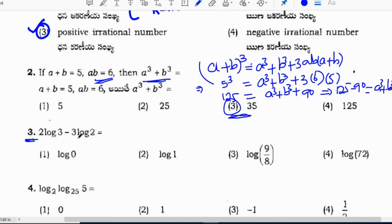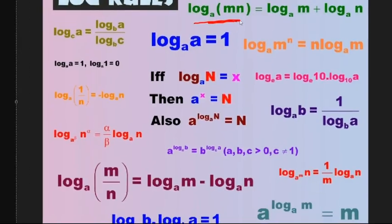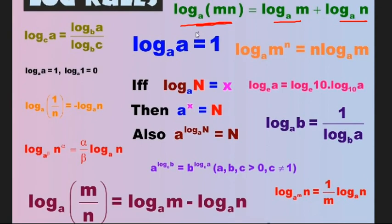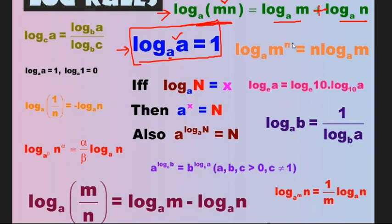Third question: 2 log 3 minus 3 log 2. Before solving this, let's discuss logarithm formulas. Log(mn) = log m + log n. Log(a×b) = log a + log b — multiplication in logarithm becomes addition. Log base a of a equals 1 — when base and function are the same, the answer is 1. Log of m to the power n equals n log m.